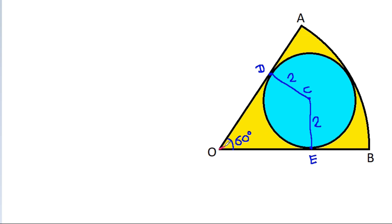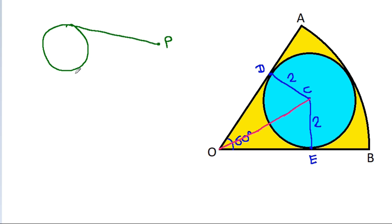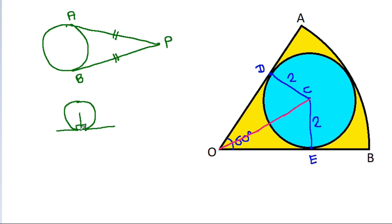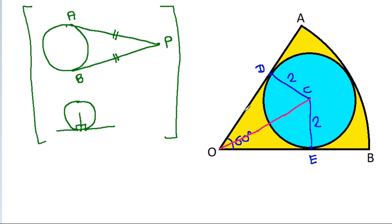Now, if we join O to C, then from any point P, if we make 2 tangents on a circle at points A and B, then PA will be equal to PB. Also, in any circle, the radius and tangent are perpendicular to each other. So here, OD will be equal to OE, and these angles will be 90 degrees.